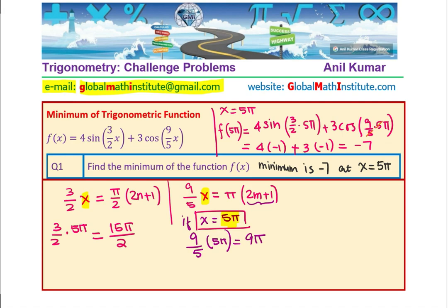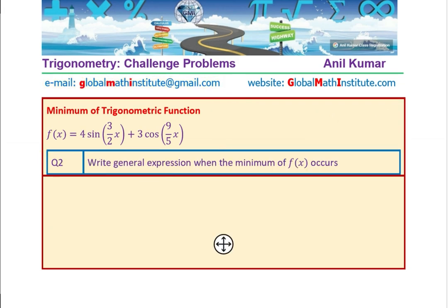So, now we know that 5 pi is definitely giving us the same answer. A minimum value of minus 7 is realized at this particular point. So, we get solution of question number 1. Now, let us look into the general expression. To find general expression, we will see when will these two waves match each other. So, for that, let us analyze the periods.